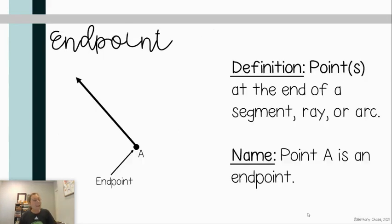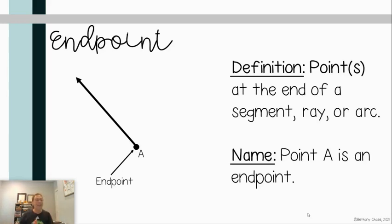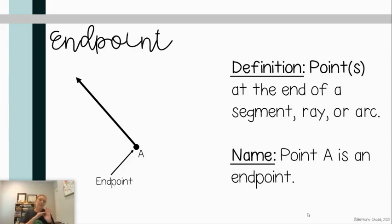An endpoint is a point at the end of a segment or a ray, which we're going to talk about in just a moment. Point A here is an endpoint because the line does not extend past point A — that is why it is called an endpoint.